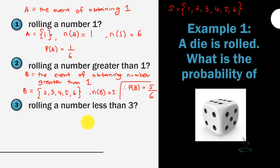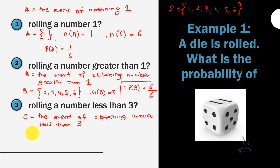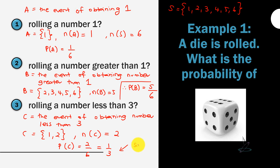For question 3, rolling a number less than 3: let C be the event of obtaining a number less than 3. Numbers less than 3 are {1, 2}, so n(C) = 2. Therefore, P(C) = 2/6, which simplifies to 1/3. Always leave your answer in simplest form.